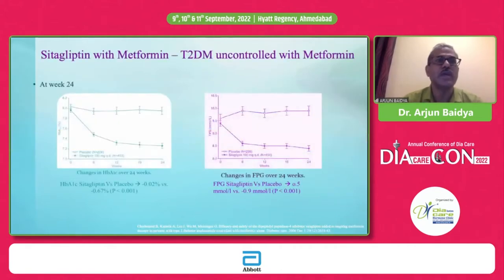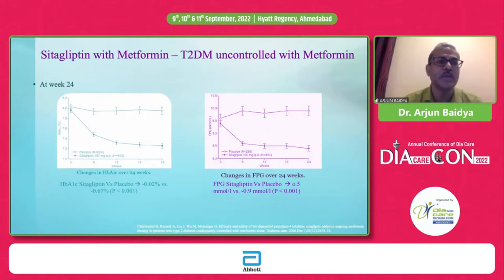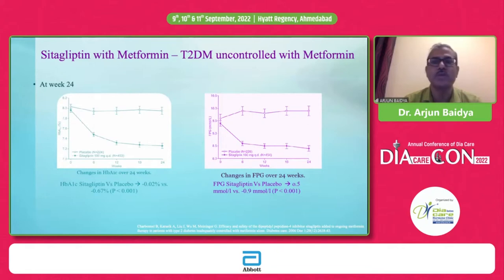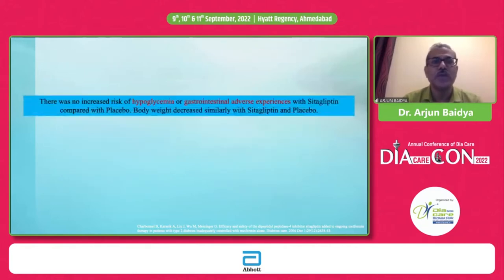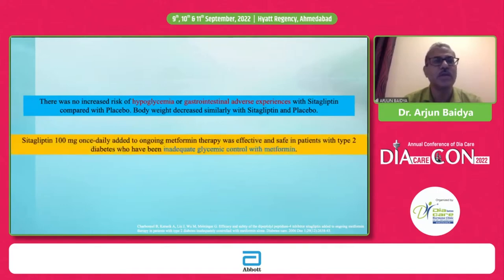Looking at sitagliptin added to metformin versus placebo in type 2 diabetes uncontrolled with metformin: at 24 weeks, HbA1c reduction was 0.67% with sitagliptin versus 0.02% with placebo, and fasting plasma glucose was reduced by 0.9 mmol/L with sitagliptin. There was no increased risk of hypoglycemia or GI adverse events compared to placebo, and body weight decreased similarly in both arms. Sitagliptin 100 mg once daily added to ongoing metformin was effective and safe in patients inadequately controlled with metformin.